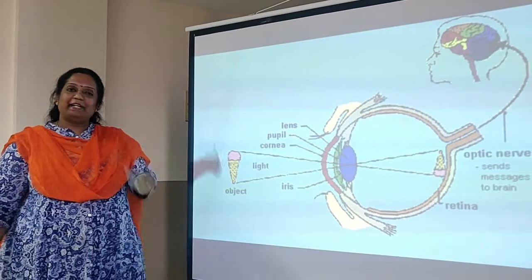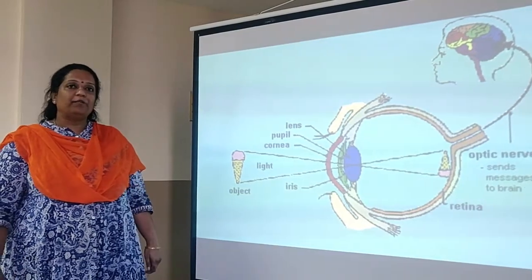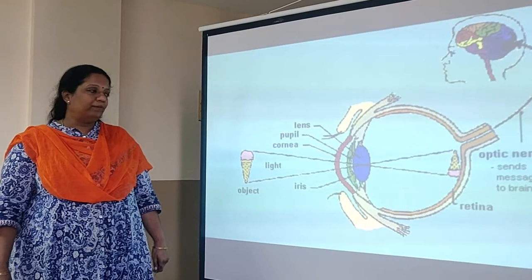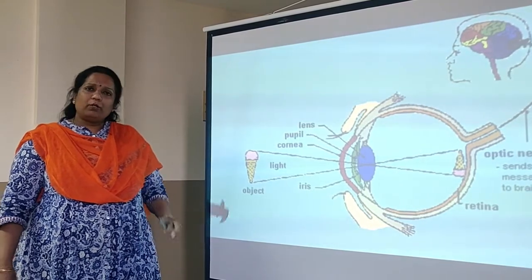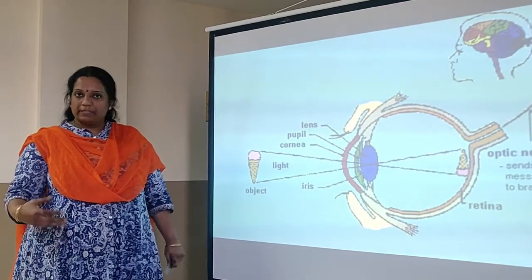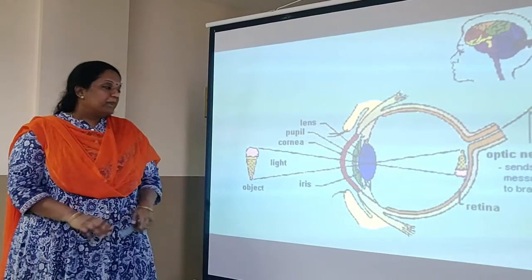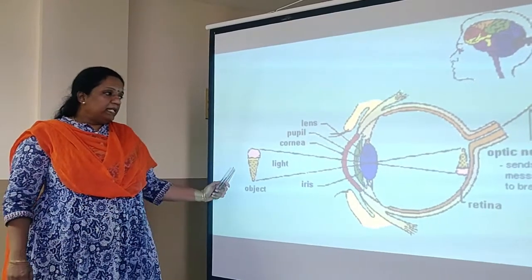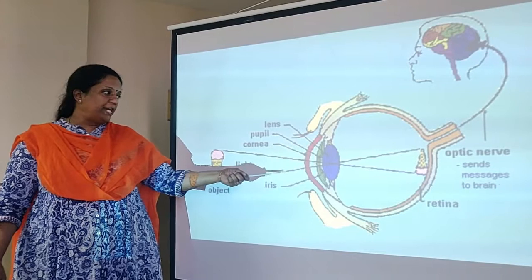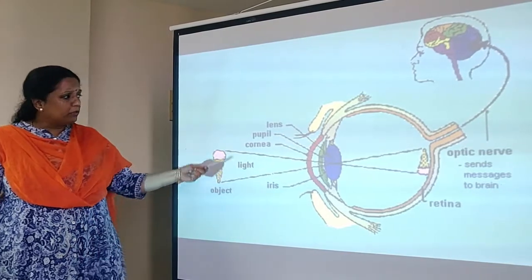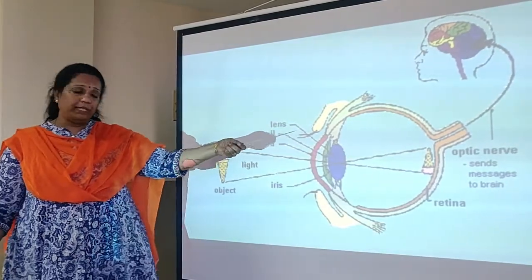Here we gather again for the second session of the human eye and the colourful bird. We will begin with a quick recap of what was discussed in the previous class. We learnt that the human eye is almost spherical in shape, and we also learnt the various parts of the human eye.